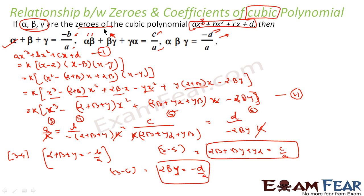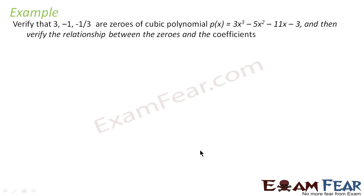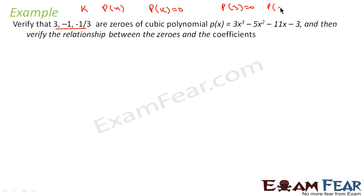It's good to know. Let's solve one example to clear the concept. In this example, we have to verify that 3, −1, and −1/3 are zeros of this cubic polynomial, and then verify the relationship we derived. To prove that k is a zero of p(x), we just prove that p(k) = 0. So let's find p(3), p(−1), and p(−1/3).